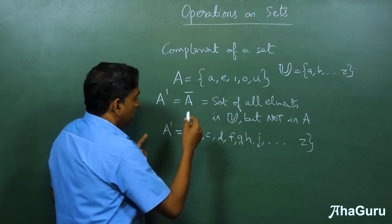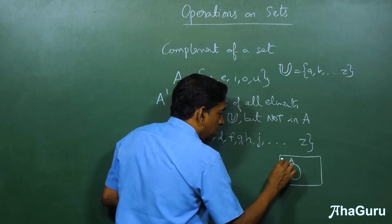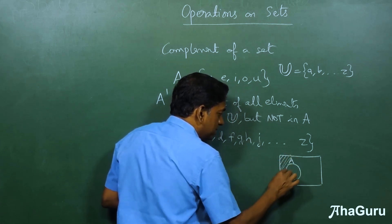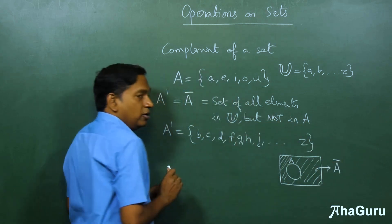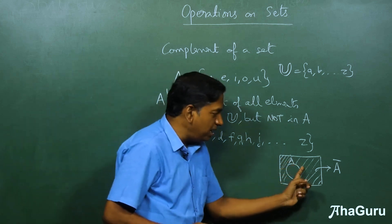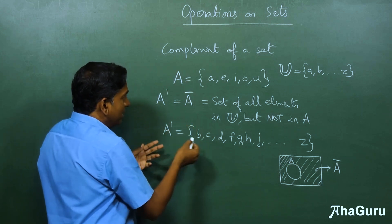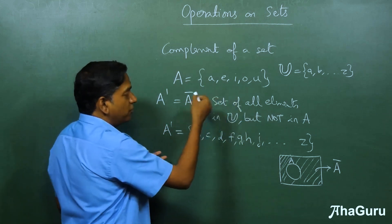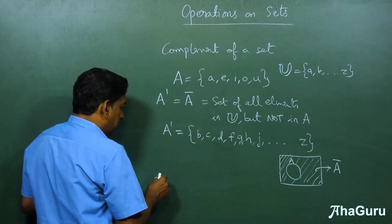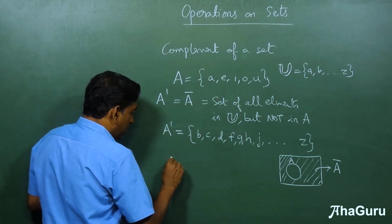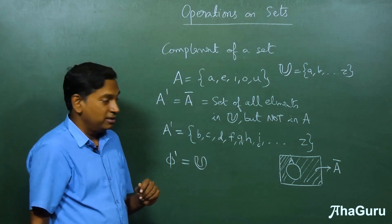In Venn diagram form, if the universal set is the box and A is the circle inside it, then A complement is the region outside the circle but inside the box. If you have another set B, outside of B will be B complement. Some properties of complement: the complement of the null set is the universal set, and the complement of the universal set is the null set.